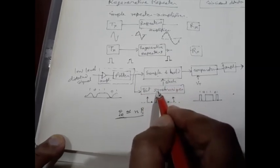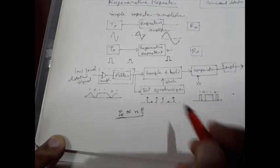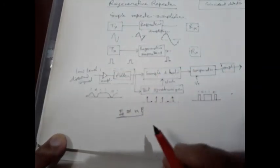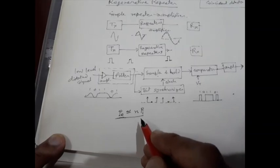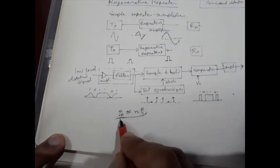So those are the problems associated with repeaters, and you have to select the number of repeaters and distance between two successive repeaters very judiciously. Otherwise, there is a chance of enhancement of the bit error probability.